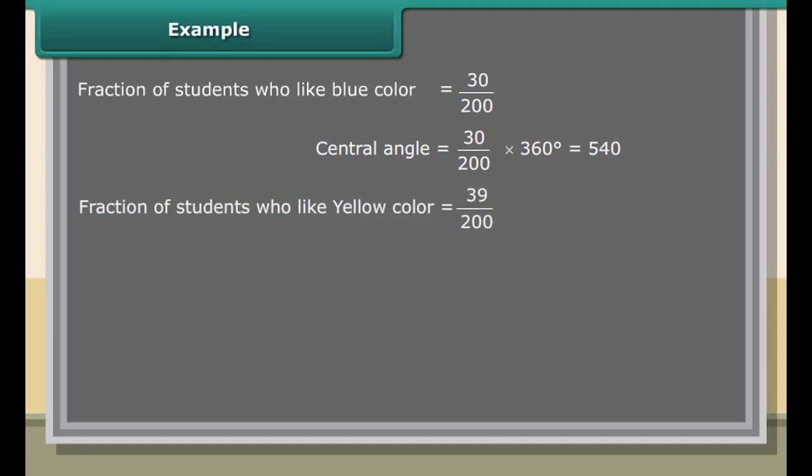Circle graph: A circle graph divided into pieces, each displaying the size of some related piece of information. Circle graphs are used to display the sizes of parts that make up some whole. Circle graphs are also known as pie graphs. Example: The favorite colors of students in a school is given in the following table.